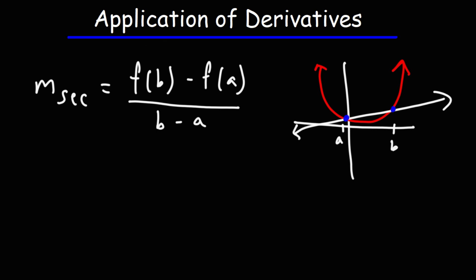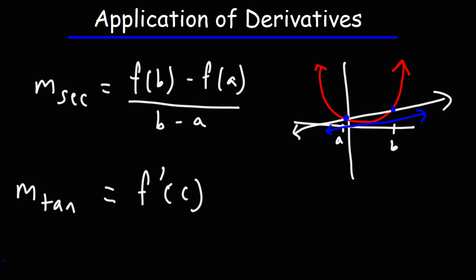Sometimes you need to calculate the instantaneous rate of change. The instantaneous rate of change is basically evaluating the derivative at some point — this could be point C. The instantaneous rate of change is equal to the slope of the tangent line. The slope of the tangent line will equal the slope of the secant line, and that's the basic idea behind the mean value theorem.